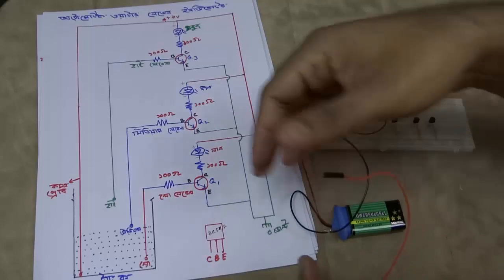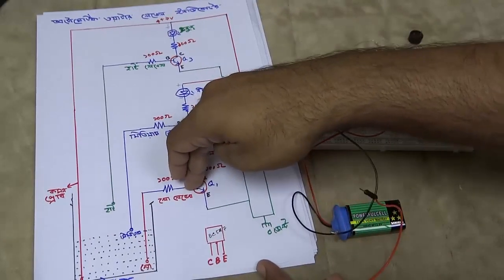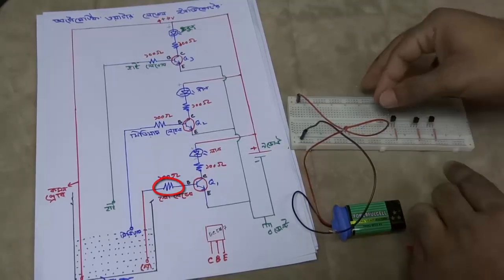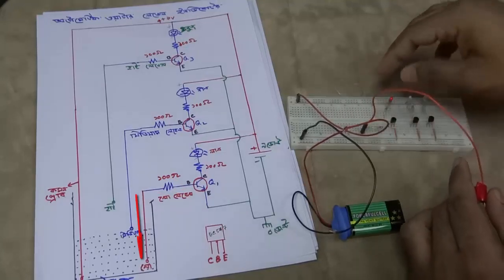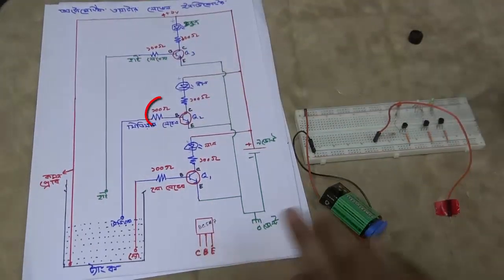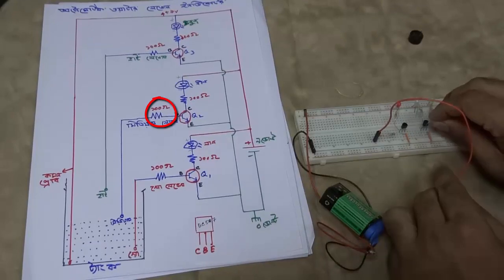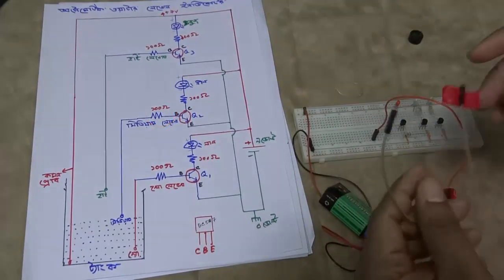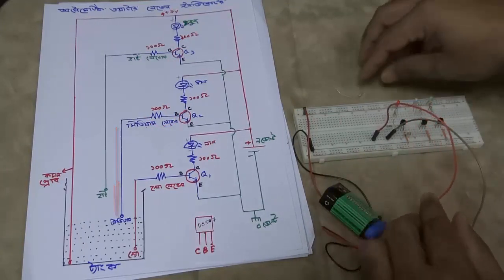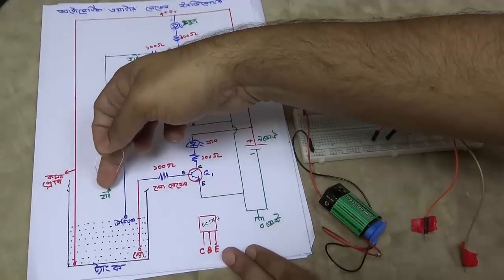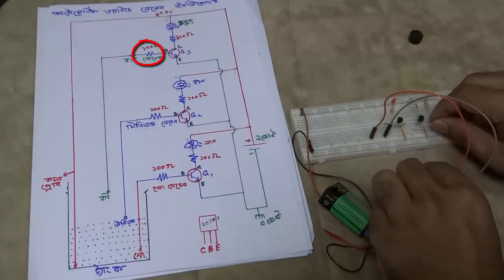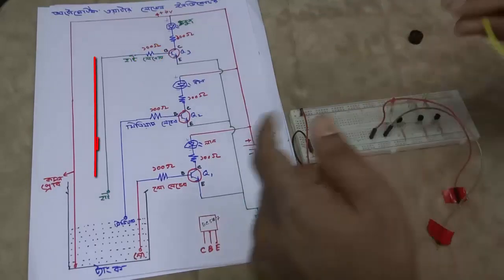You should connect the probe to the low level and use the base connection. After the base, connect the low level probe. Then connect the medium level probe. We will pour the water. There are 3 probes for high level, with a 100 ohm resistor.